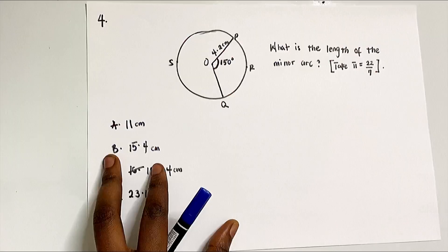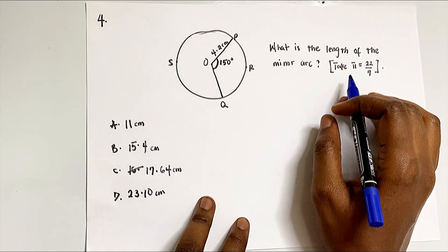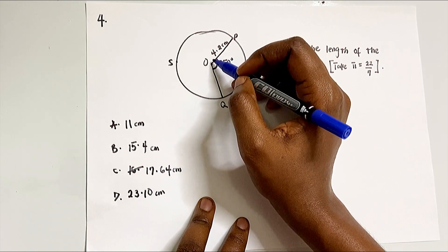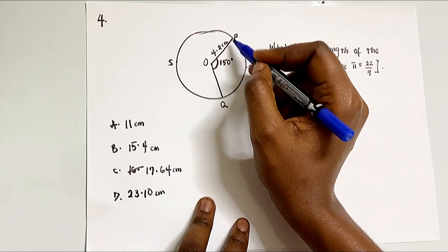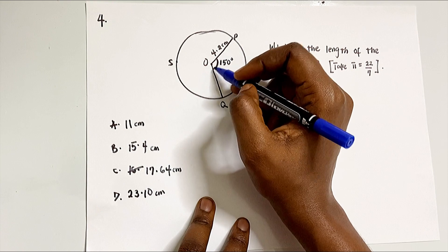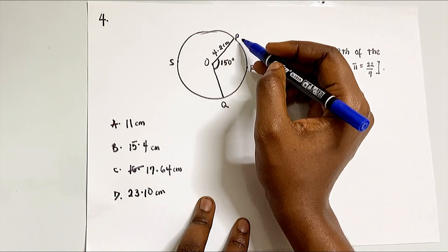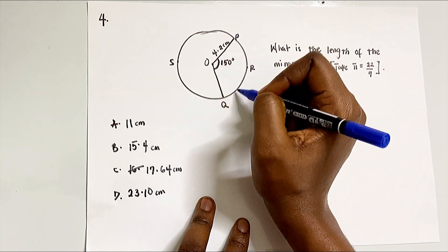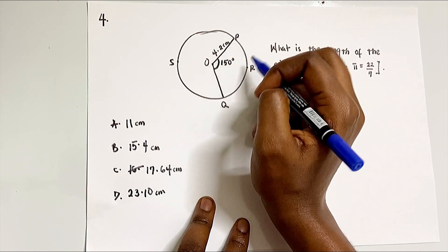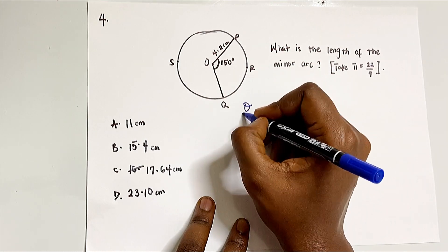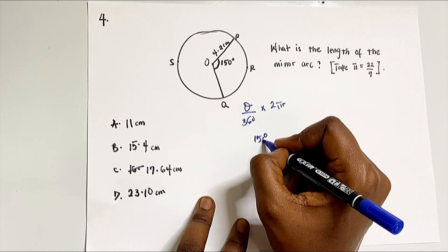Question four involves a circle and asks: what is the length of the minor arc? The center is shown, with a radius, a major arc, and a smaller minor arc. The arc length is a fraction of the full circumference (2πr). The formula is: arc length = (θ/360) × 2πr, where θ is the angle subtended at the center.